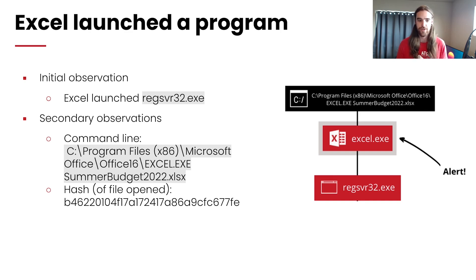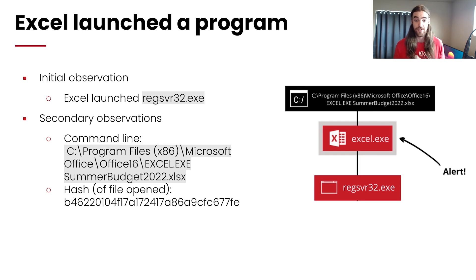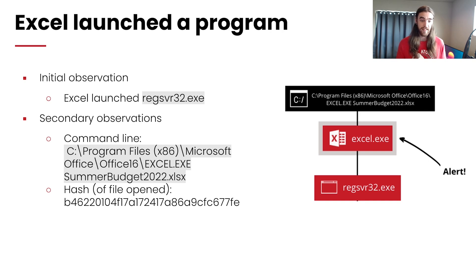We could also build our own process tree through event logs, but we're here to talk methodology. We can see Excel launched regsvr32.exe. Beyond that, there are other interesting things: we have the command line from the alert, and a file that appears to be opening — 'Summer Budget 2022' — as a result of this. We also have the hash of that file that was opened before regsvr32 was executed. These are interesting things to jot down and leverage as we move forward in the investigation.